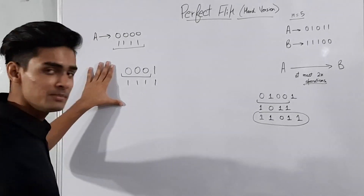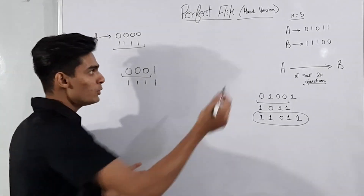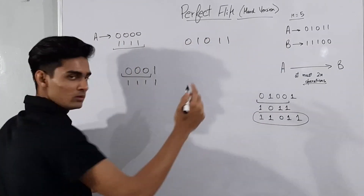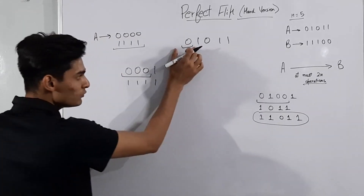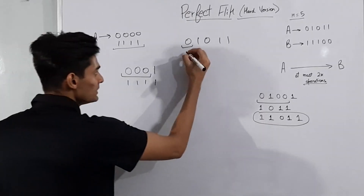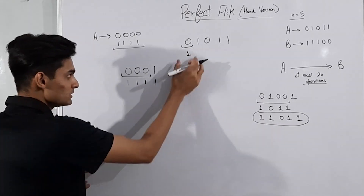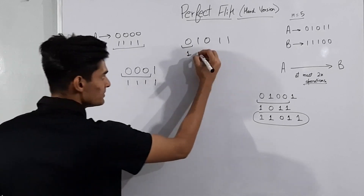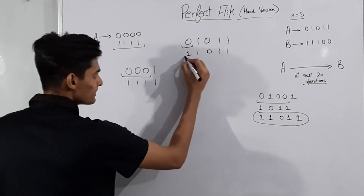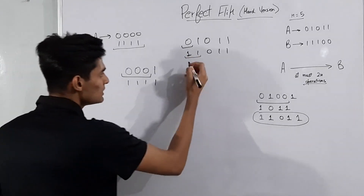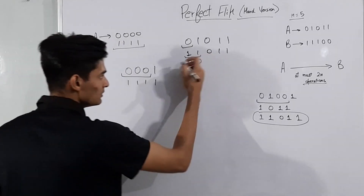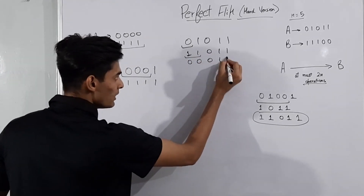Let's try this approach for the string '01011'. Take the prefix of length 1, invert the bit — 0 becomes 1 — and reversal of a single bit is the same, so the string becomes '11011'. Now take prefix of length 2, invert bits to get '00', reverse is same, so the string becomes '00011'. Then take prefix of length 3, invert bits to get '111', and the complete string becomes '11111'.